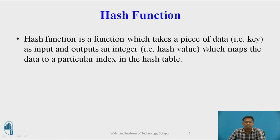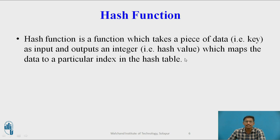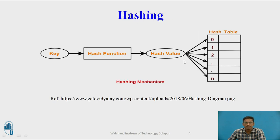What is a hash function? Hash function is a function which takes input data — that is, a key — as input and generates an output which is an integer we call a hash value, which maps input data to a particular index inside the hash table. Again going to the diagram, this hash function takes input data and generates a hash value — an integer value based on the input data — which is the index of the hash table where to store this input data or key. So hash value is nothing but a location where to store this input data inside the hash table.